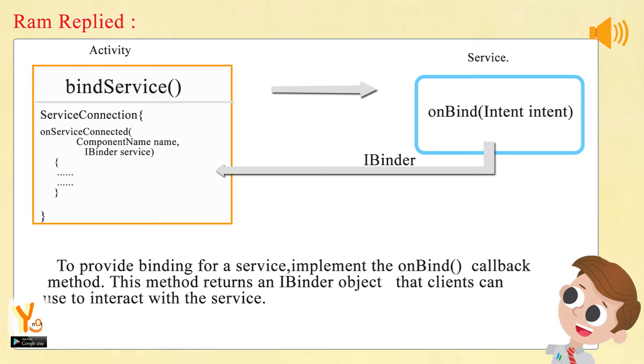To provide binding for a service, implement the OnBind callback method. This method returns an IBinder object that clients can use to interact with the service.